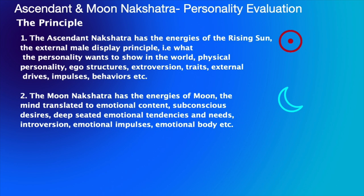We are talking about both the display of external and internal, and that's all we are in this polarized world when we come in as souls. Let's evaluate with case studies one by one, because we are talking about three kinds of ganas here — the devgana, the manushyagana, and the rakshasagana — and we are talking about ascendant and moon nakshatra placement in the birth chart.